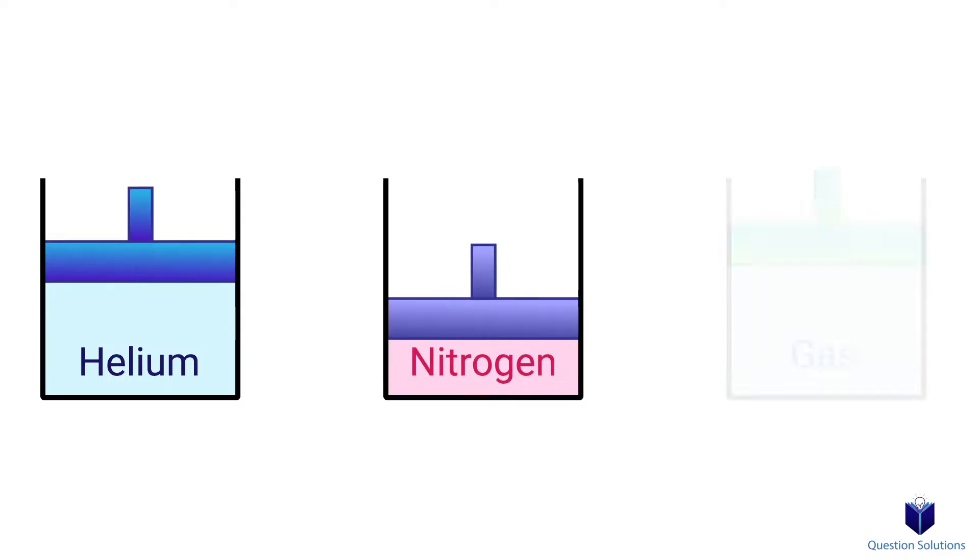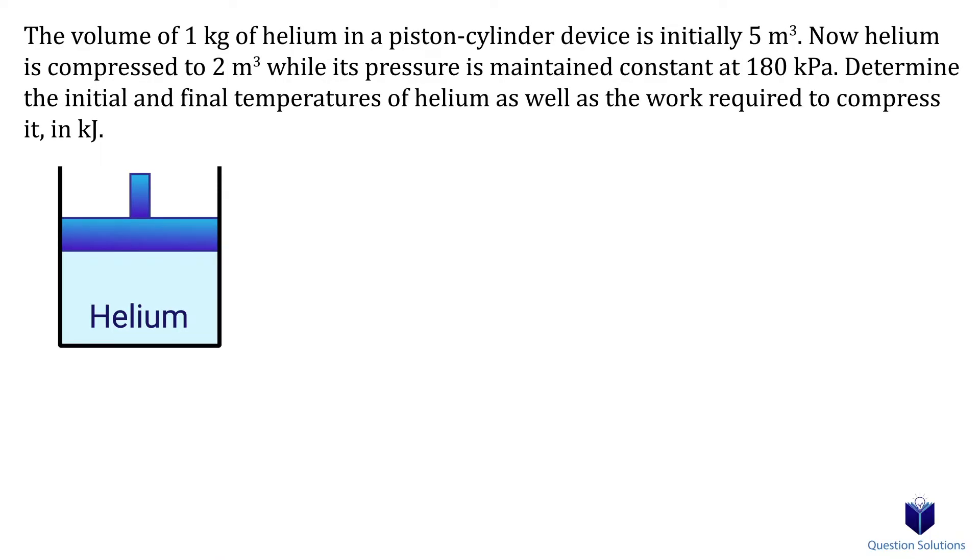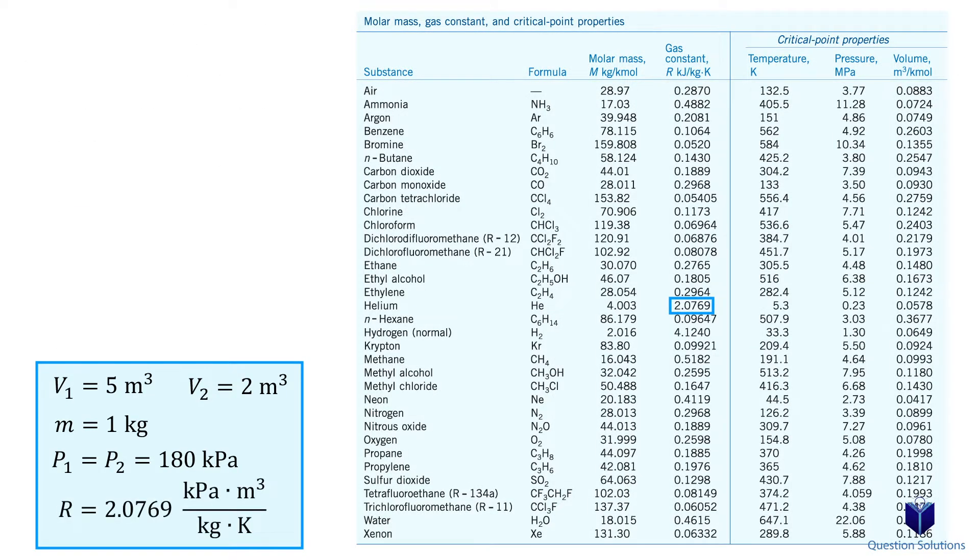Now let's go through some examples to see how we can use the equations we talked about. In this question, we have helium in a piston cylinder and it's compressed. We need to find the initial temperature, final temperature, and the work required to compress the helium. Let's write down what we know. The initial volume is 5 cubic meters. There is 1 kilogram of helium. The pressure at the initial and final state is 180 kilopascals since it's maintained to be constant. And the final volume is 2 cubic meters. We also need the gas constant of helium, which we can find using our table, that's the value right here.